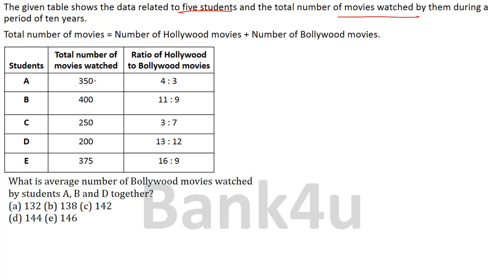These are the number of movies which they have watched during the past 10 years. The ratio of Hollywood to Bollywood movies is also given. We shall not waste our time when we come across the questions. We shall calculate the ratios now itself, so it will be easy for us to do it later. So for student A, the total is 350 and the Hollywood to Bollywood ratio is 4 is to 3.